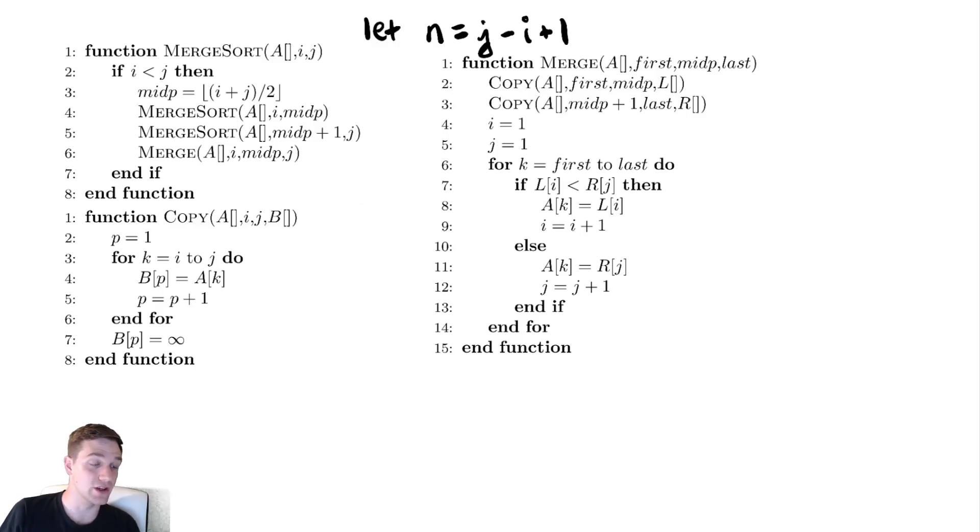Now let's look at the sizes of our recursive calls. Well this first one here, I'm going to put a star next to it, is going to be midp which is i plus j over two minus i plus one. So that equals j minus i over two plus one. And for our purposes we'll just say that's approximately equal to n over two.